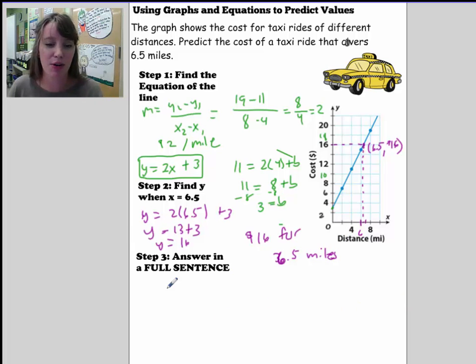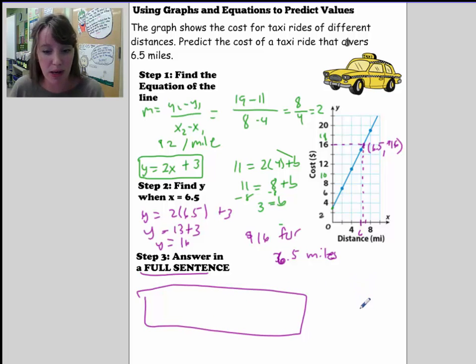Step 3, answer in a full sentence. So that's just to remind you that if you have a word problem, you answer in a full sentence. So here, you're writing down the full sentence. It would cost $16 for 6.5 miles.